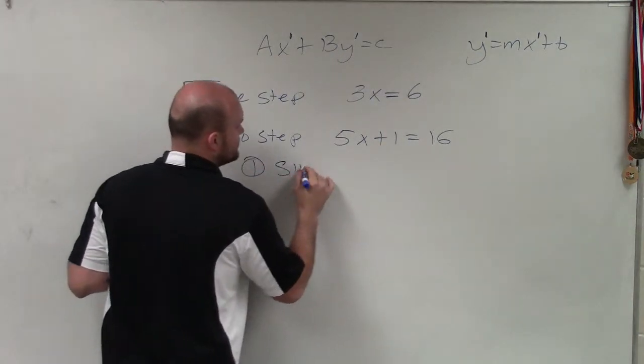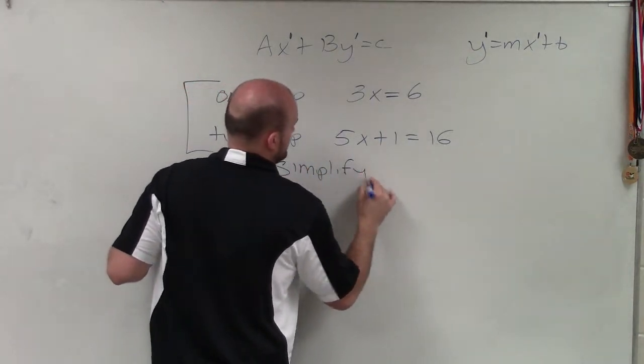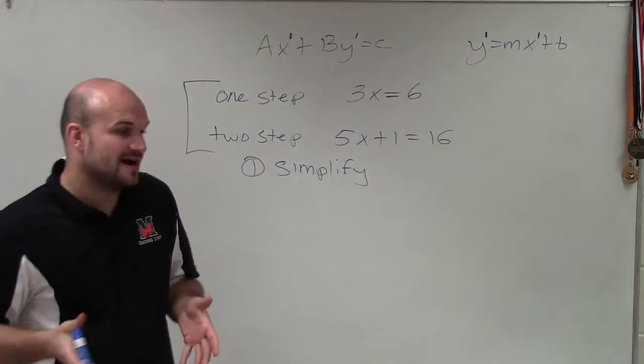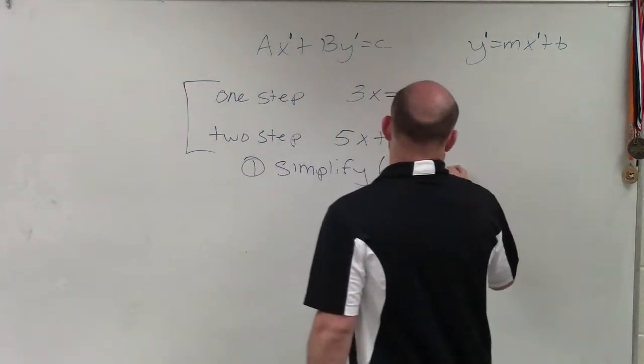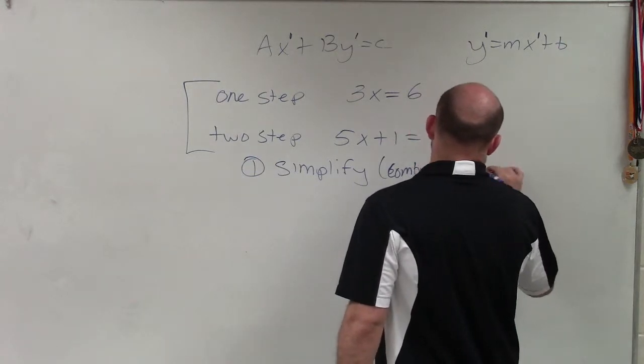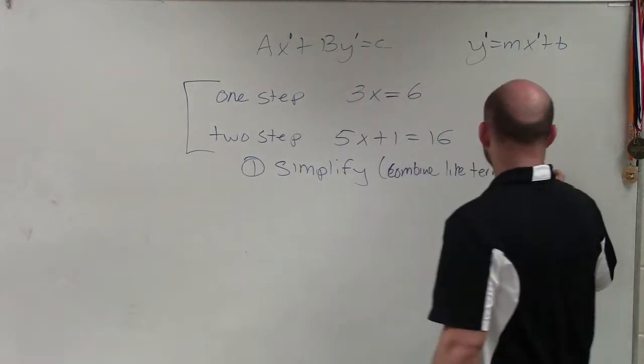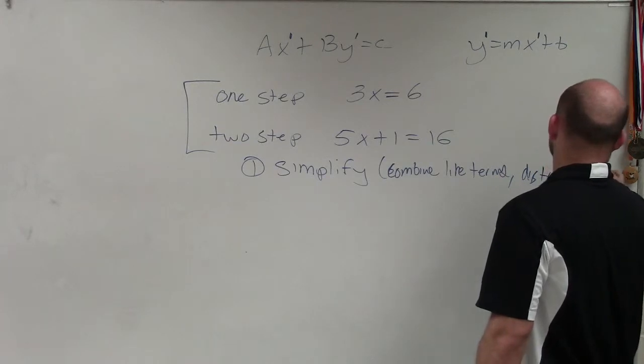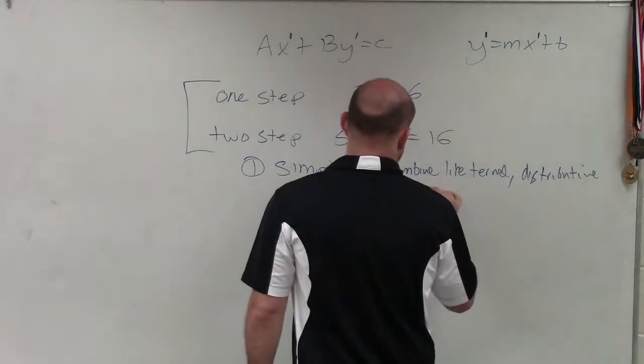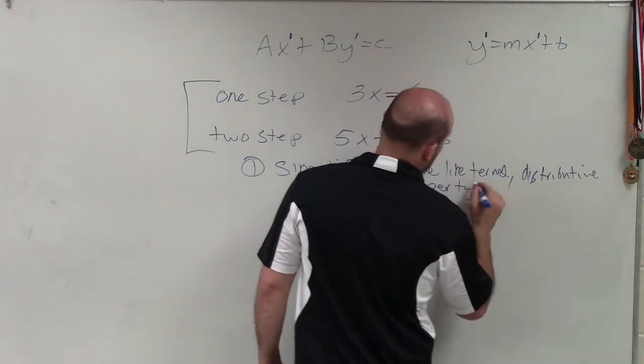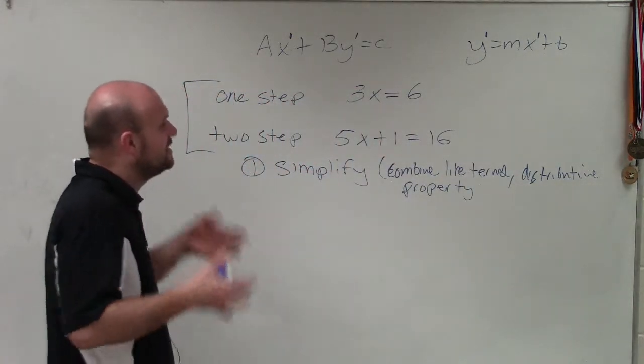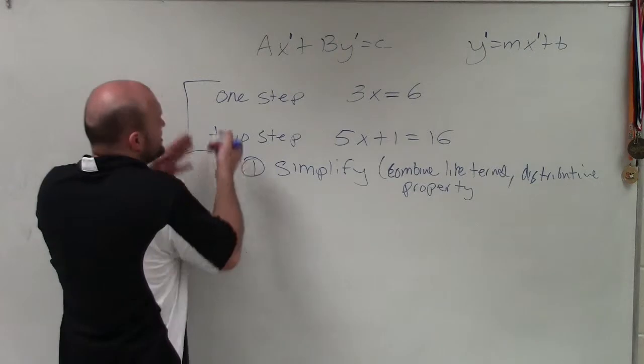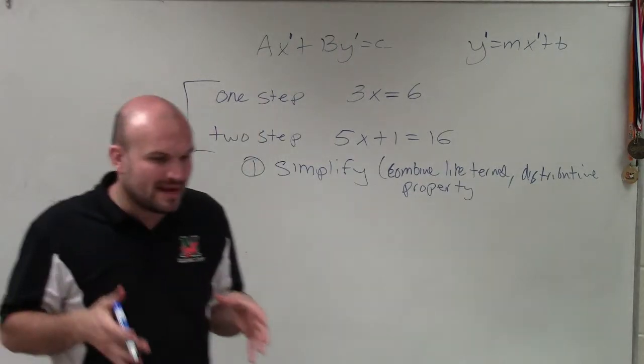So let's kind of write that down as the first. First step is to simplify. OK? And when I mean simplify, I mean combine like terms. Apply distributive property. Combine like terms again, sometimes. But we want to keep on simplifying all the way until we can get it to a one-step or two-step.